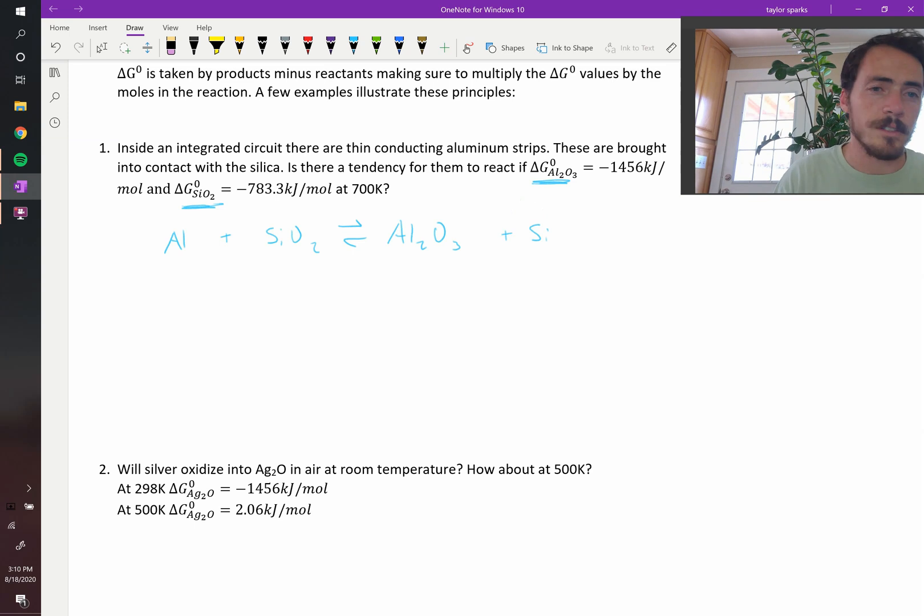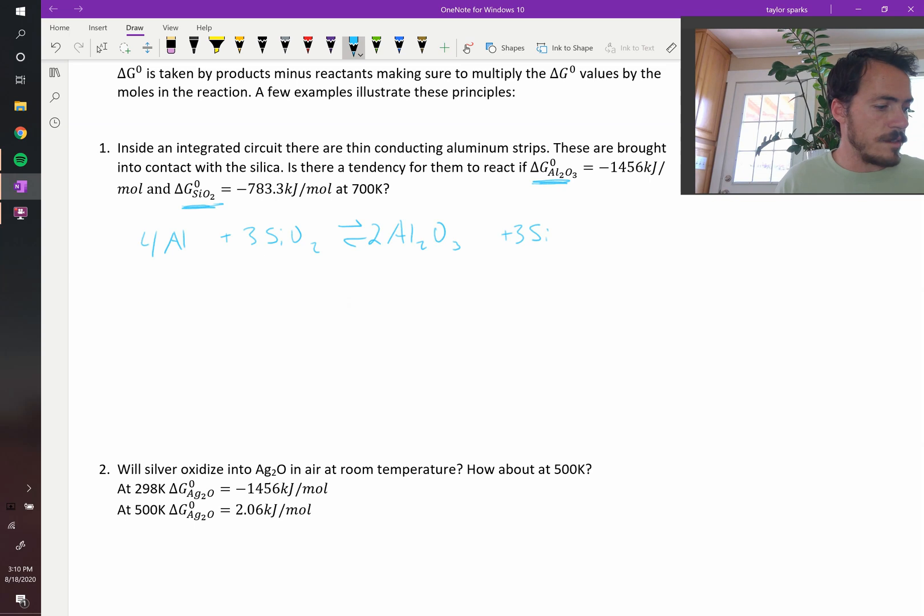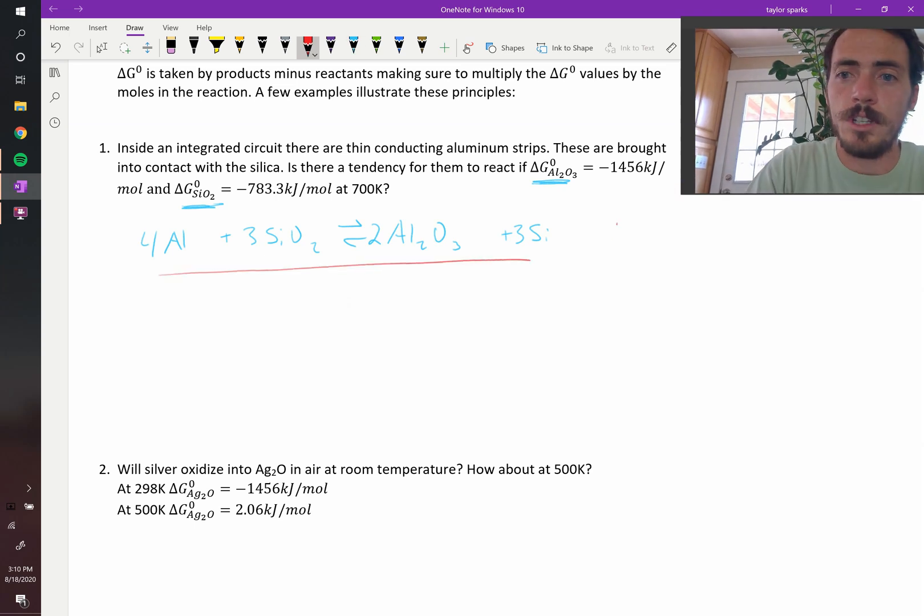Now that's not balanced currently, so we have to balance this equation. So we're going to put four over here, two over there. So now we have six oxygens on the right-hand side, which means we need three of those and three of those. That is now a balanced chemical equation. So the next step is what? If you want to know whether or not this reaction takes place as it's written here, we need to figure out delta G.